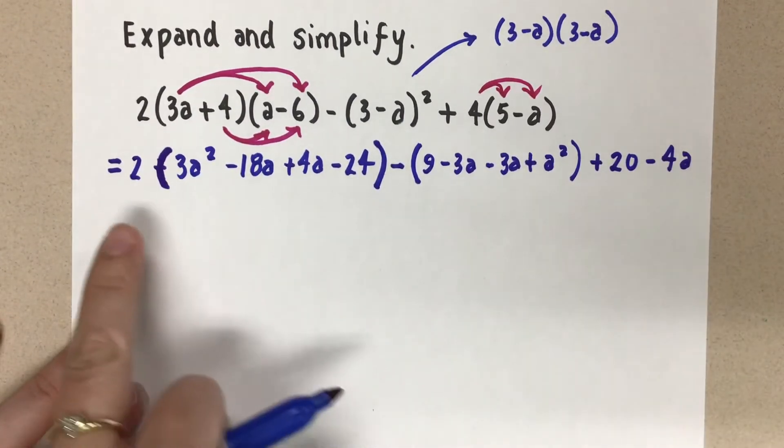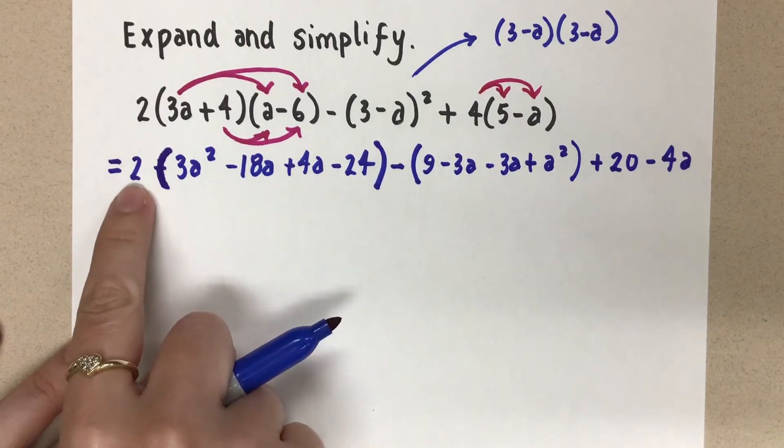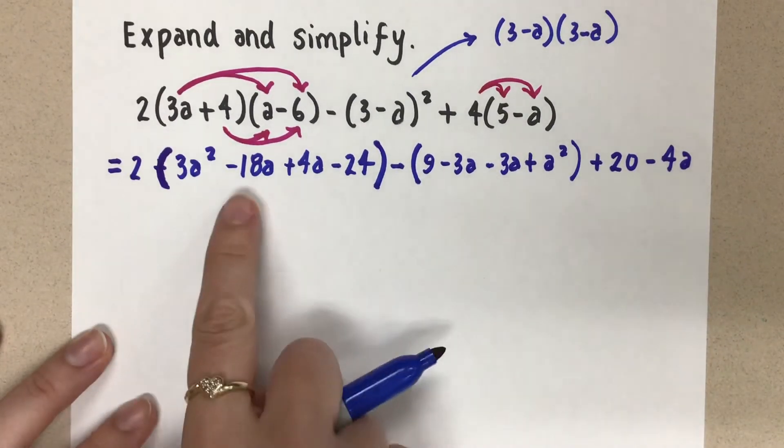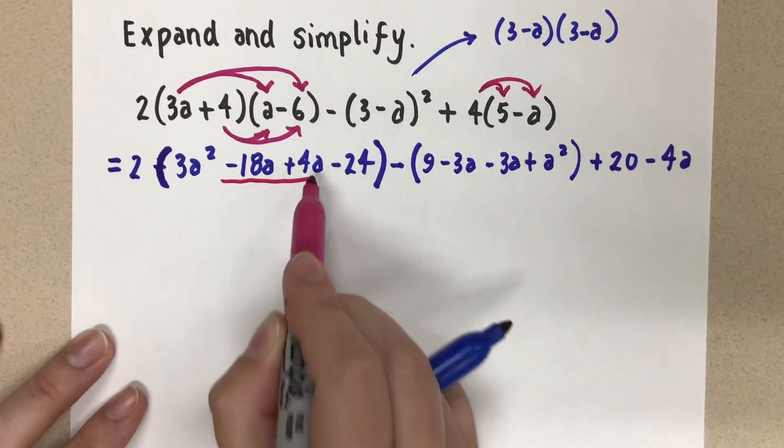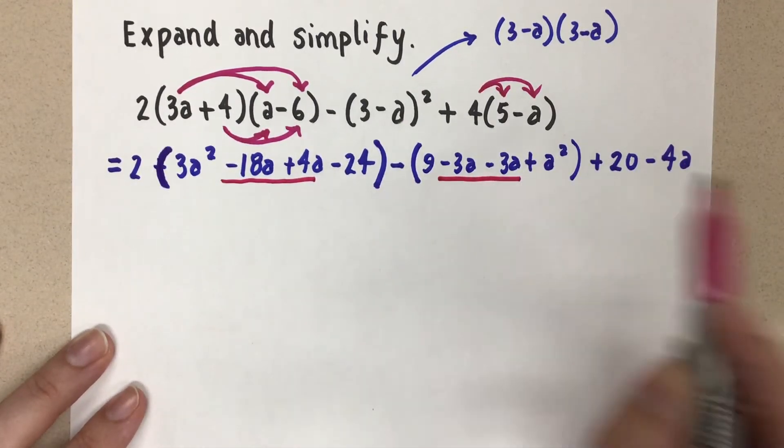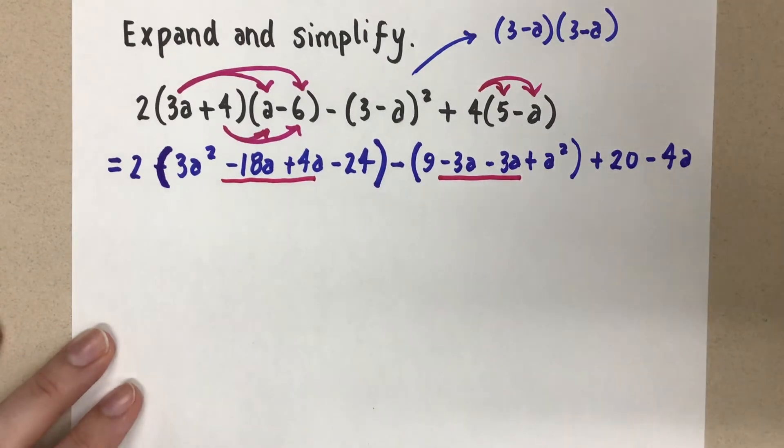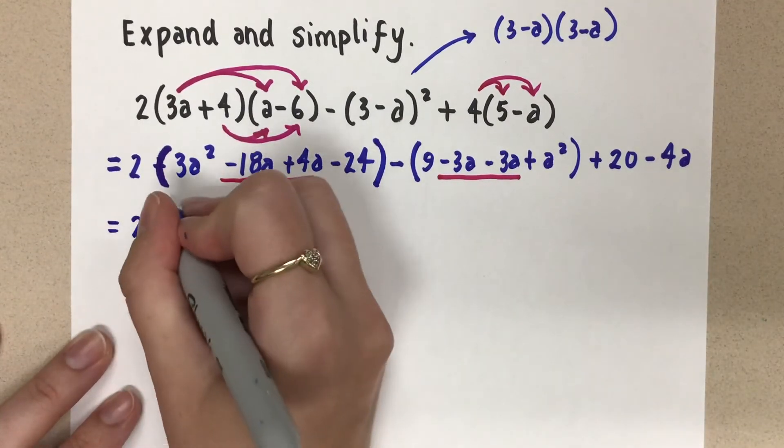So now let's go back and distribute the coefficients so that... Wait a second. I'll stop and I'll say actually, before I distribute, I want to collect my like terms inside. I would do that first, but it actually doesn't matter.